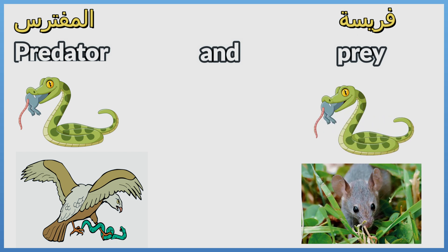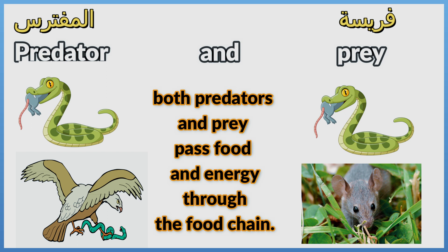The snake and the mouse are prey because they are hunted by other animals for food. So, both predators and prey pass food and energy through the food chain.